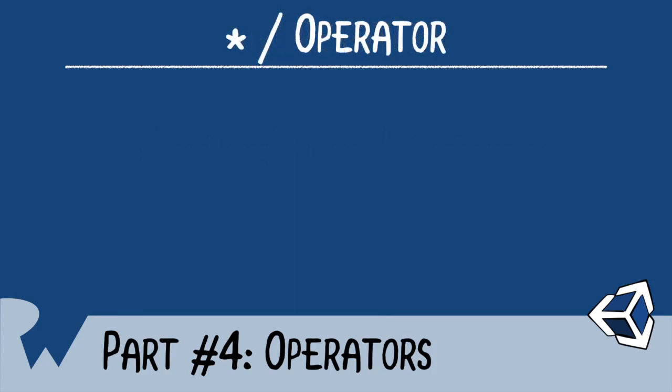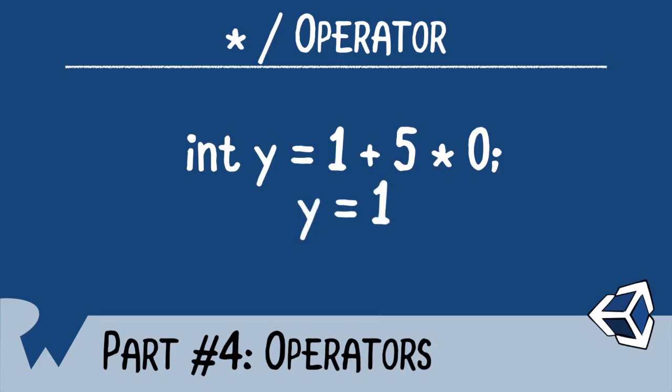The thing to keep in mind when working with them is the order of operations. The order of operations determines which operator will be evaluated first. Take a look at this statement. Int y equals 1 plus 5 times 0. Can you guess what the answer is? It's 1. You may think it's 0, but that's because you didn't follow the order of operations.